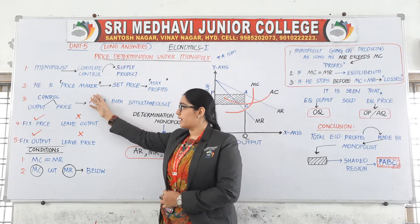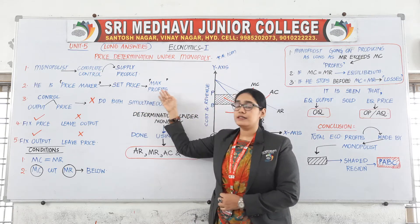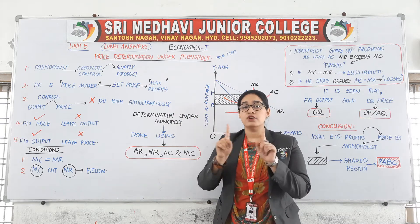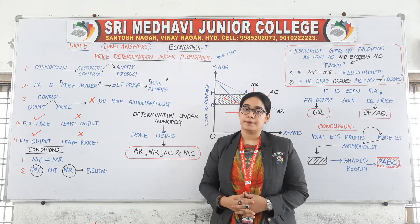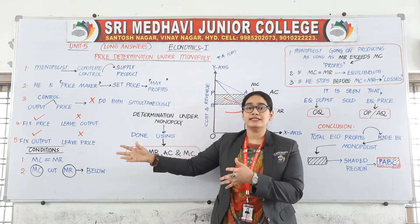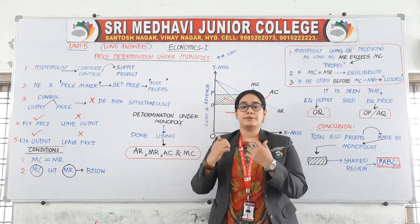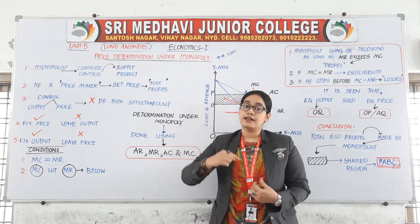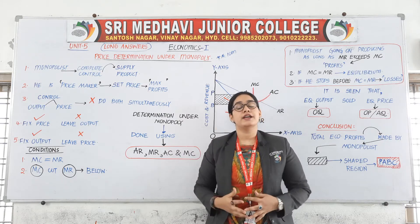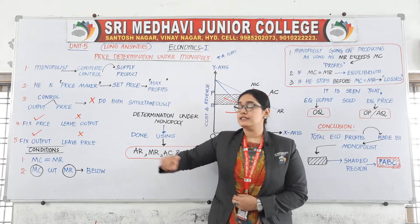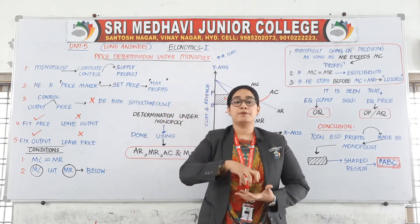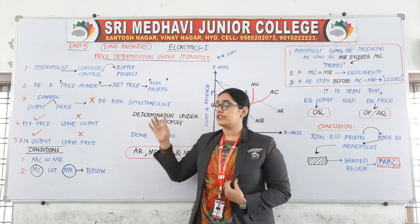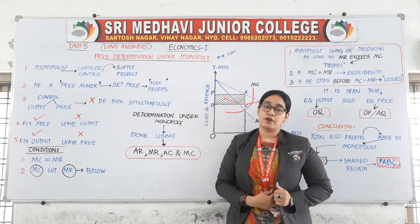The second point: he is a price maker and he will set the price in such a way that he gets maximum profits. He is not a price taker, he is a price maker. For example, if someone is allotting one price, you need to accept that price — that means you are taking that price. But the monopolist is not a price taker. He himself will make the price of the product, and while fixing that price, he will keep in mind that he should get maximum profits.